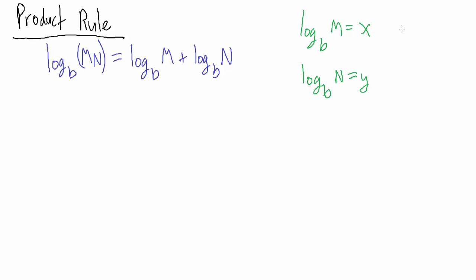If we have the base b log of m equals x, we can write this as an exponential equation: base b to the exponent x equals m. Similarly, base b to the exponent y equals n.